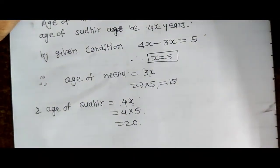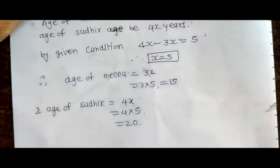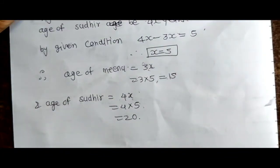Therefore age of Minu is 15 years and age of Sudhir is 20 years. Iske saath hamara Day 37 aur Day 38 complete ho chuka hai. Next lecture mein hum Day 39 aur Day 40 dekhenge. Thank you.